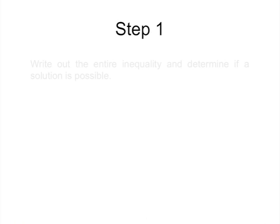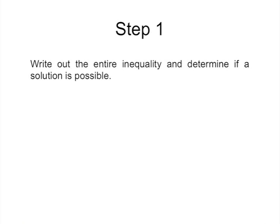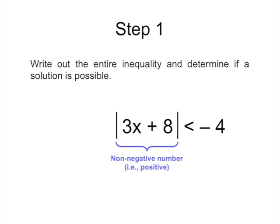And finally, we come to the last example, which is the easiest of all. The first step is to write out the entire equation and determine if a solution is possible. In this case, it is not possible because a positive number will never be less than a negative number. Therefore, there is no solution that will solve this inequality.